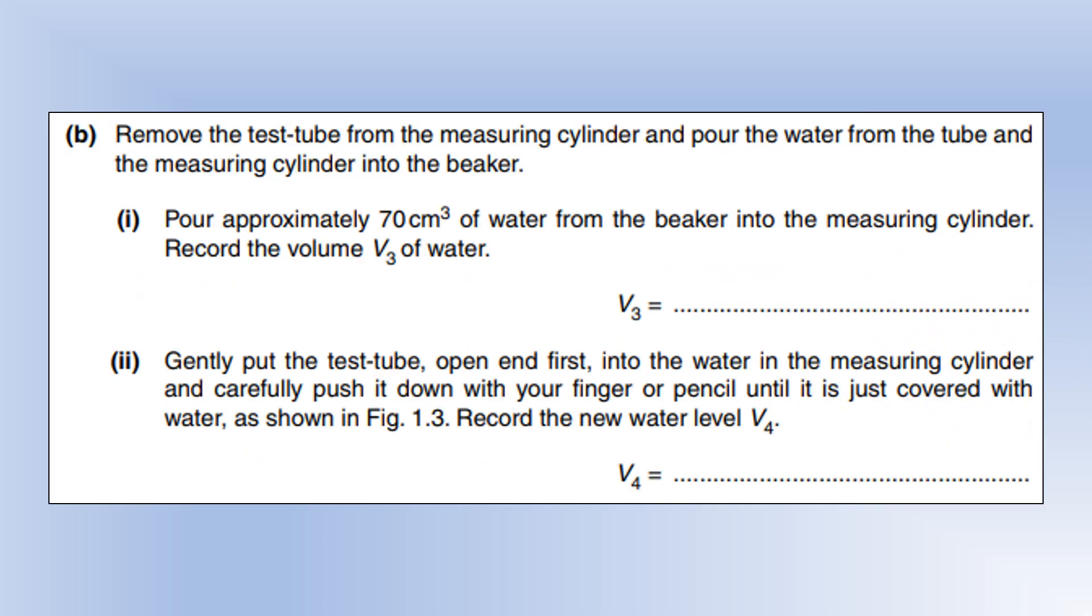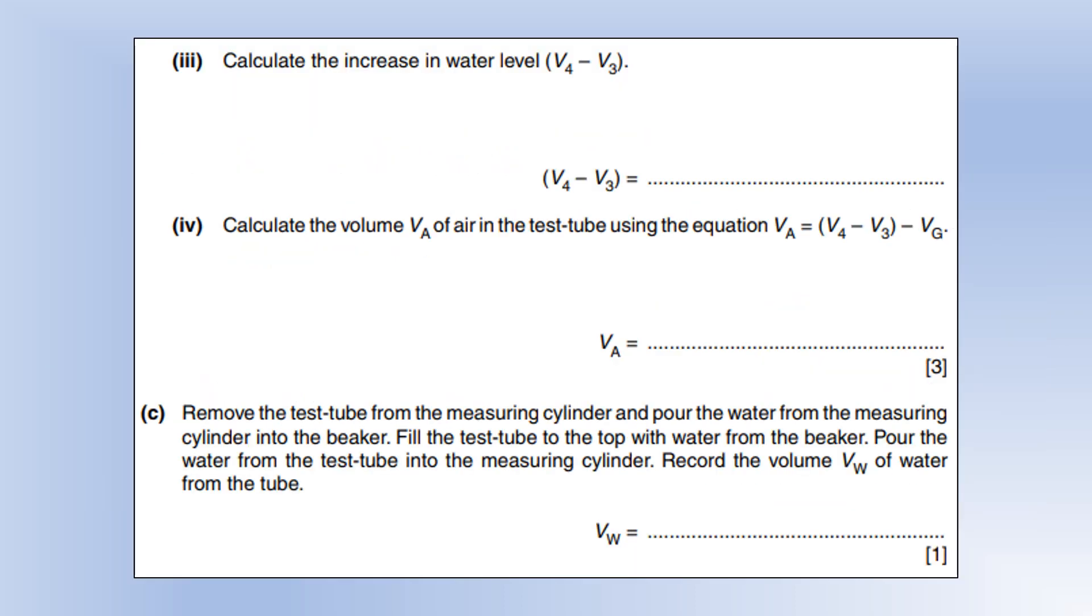Remove the test tube and now do this scenario with the air in the test tube. I actually had 69 centimeters cubed. Then we're doing it open-ended first, making sure to push it down vertically so we're not allowing any water into the test tube. When I did that I got 93 centimeters cubed. The change in water level is clearly 24 centimeters cubed, and because we know the volume of the glass, we've now got a measurement of the internal volume or the volume of air.